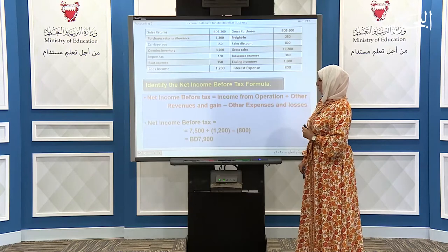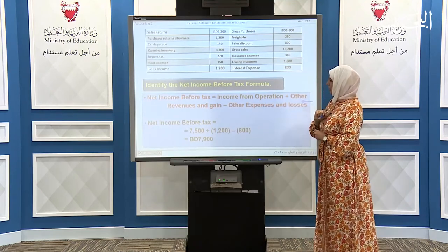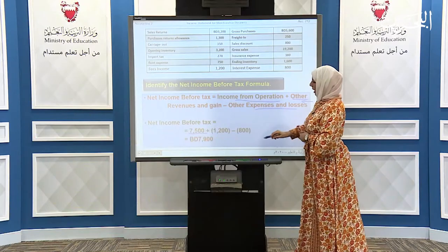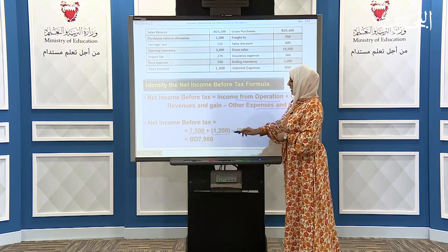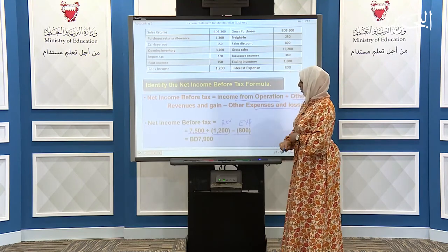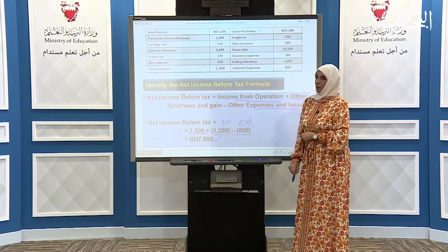Moving to the net income before tax, I apply the formula: take the income from operation, add other revenue and gains of Abdullah Company, and subtract other expenses and losses. I take $7,500, add $1,200 in revenue, and subtract $800 in expenses. Finally, I get the net income before tax for Abdullah Company.